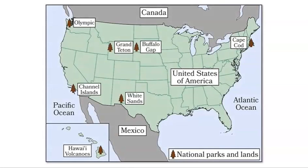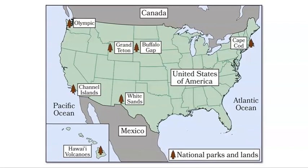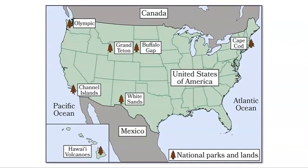Did you know that maps have a map key? The tree symbol in this map key represents national parks and lands. Can you find the tree symbol on the map? Point to the locations of the national parks and lands that we explored last time. What do you notice about the locations? I notice that they are spread out across the map.